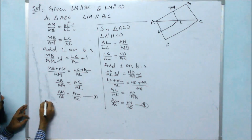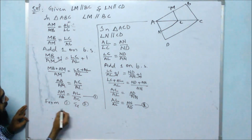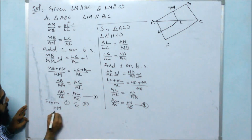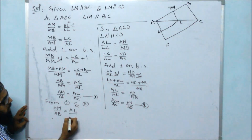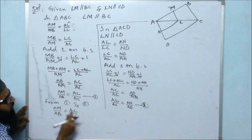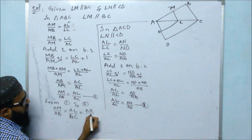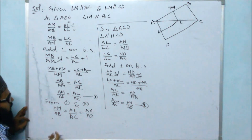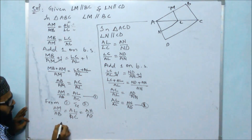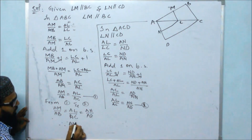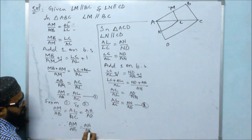From equations 1 and 2, we get Am/Ab = Al/Ac = An/Ad. We can directly write the first and last terms, so therefore Am/Ab = An/Ad.